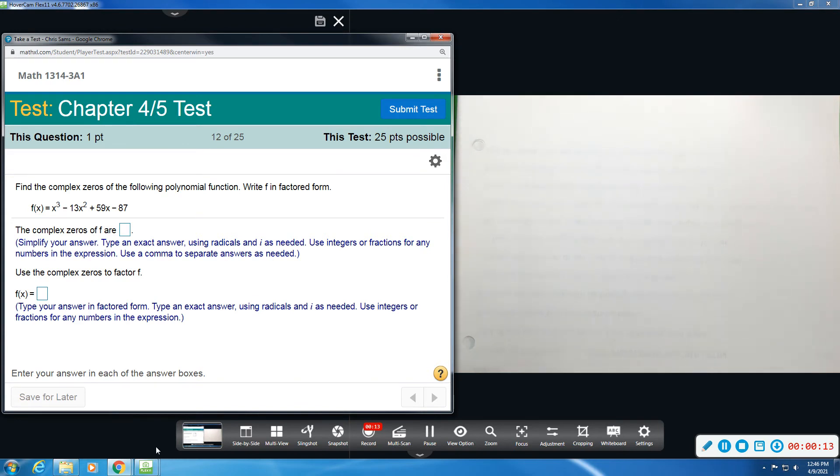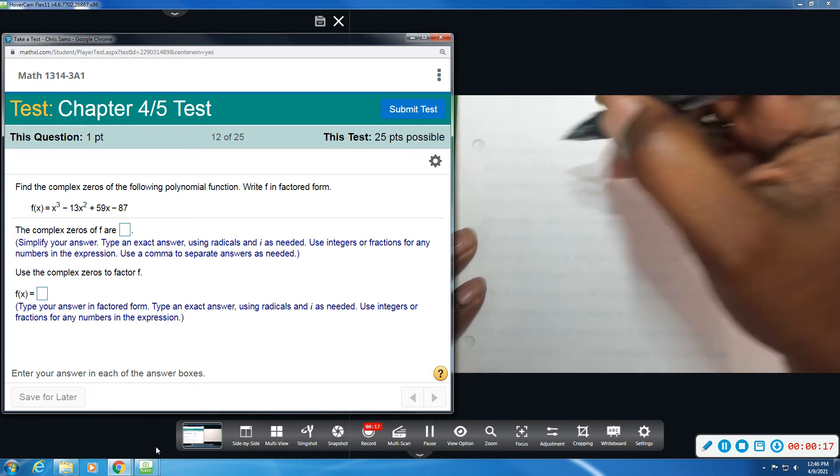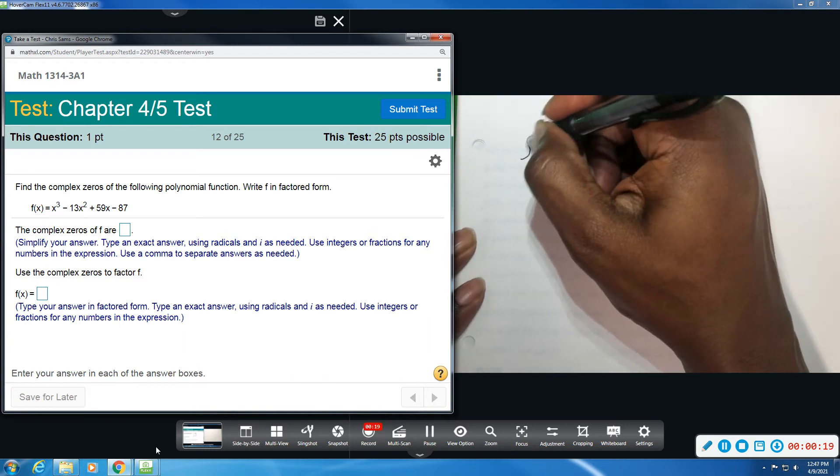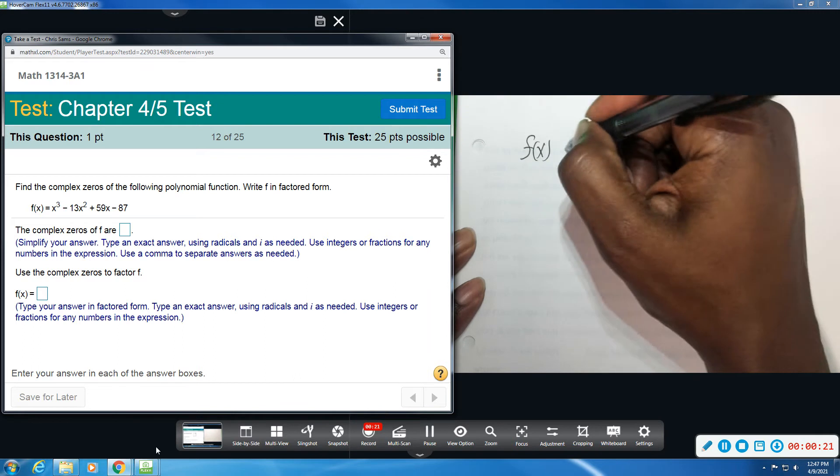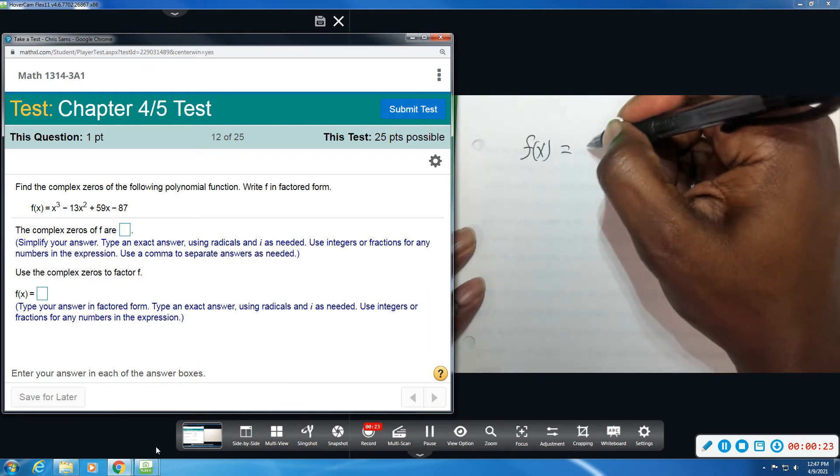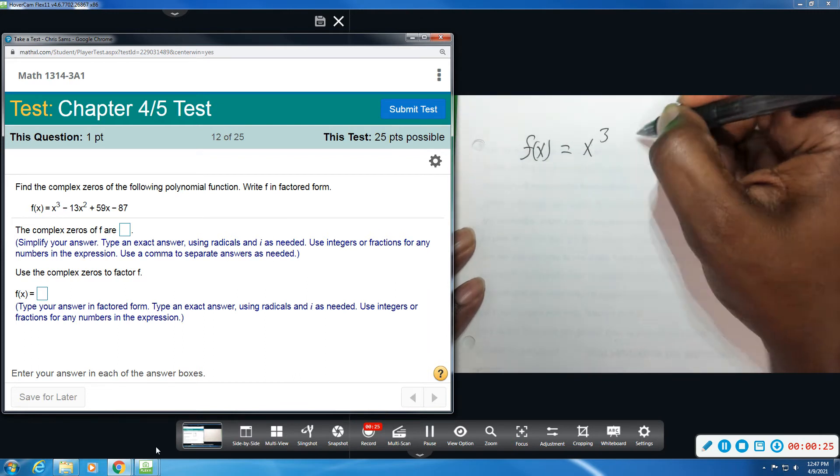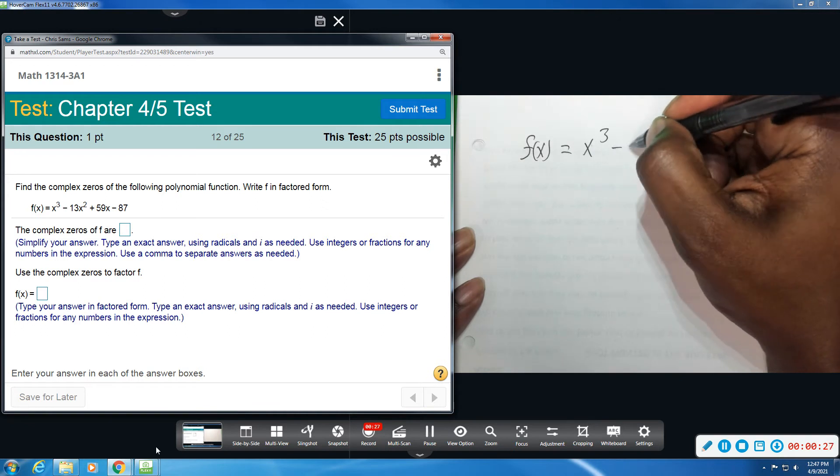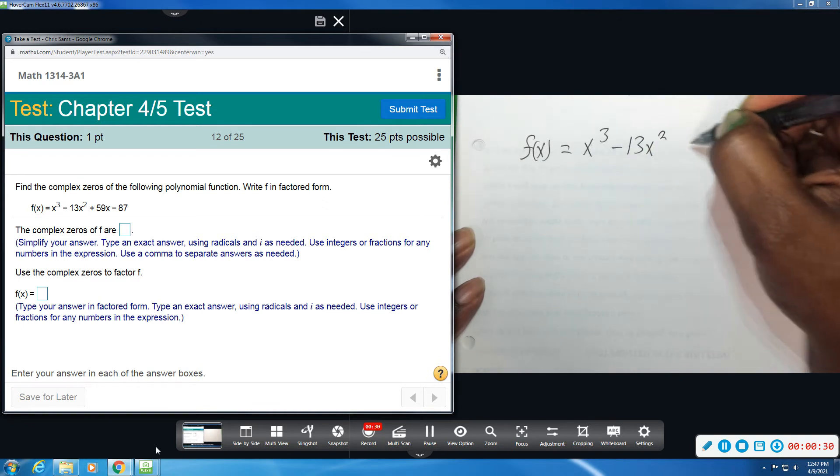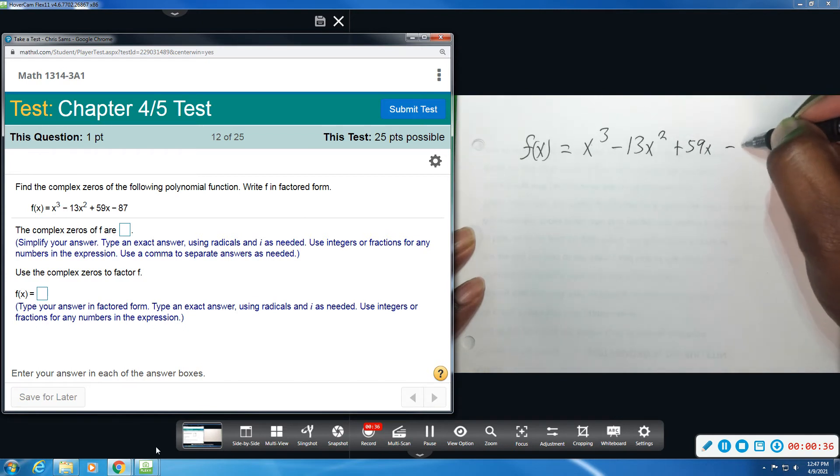In the homework, I think I showed you how to do some of this with the calculator, but I'm going to do it all by hand here. So we have f(x) = x³ - 13x² + 59x - 87.